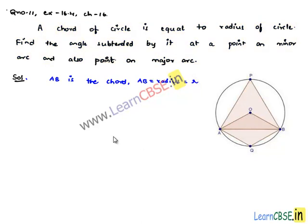Now, join OA and OB, and also OA will be equal to OB, that is R radius. Consider a point P on the major arc and join AP and PB.